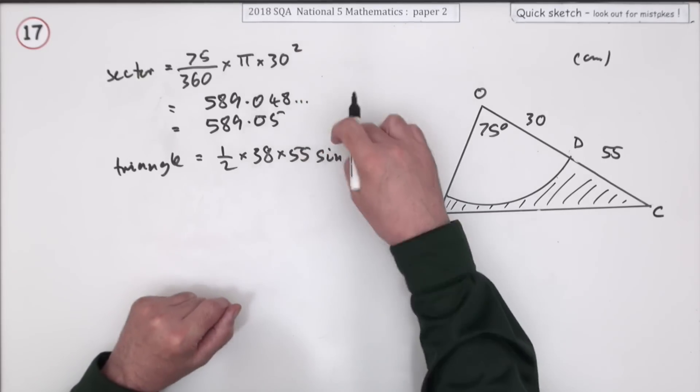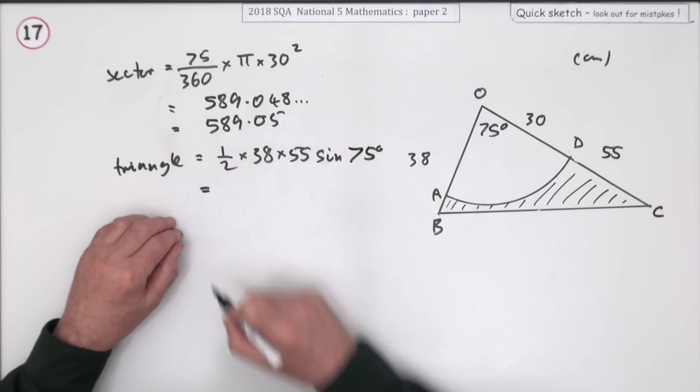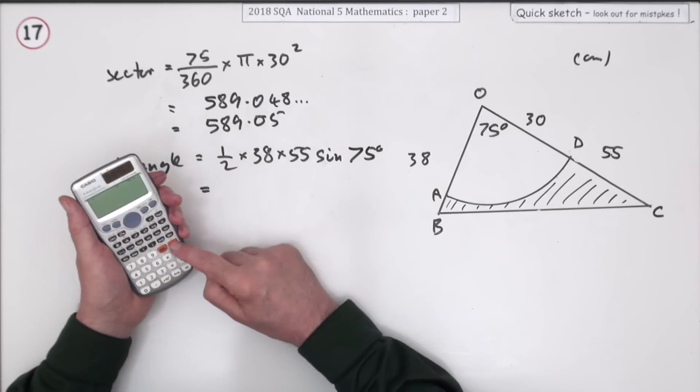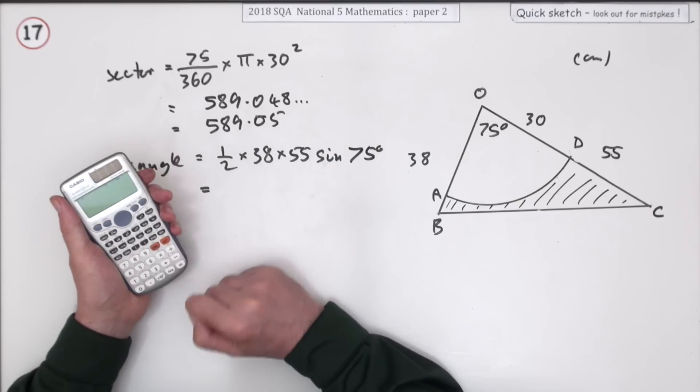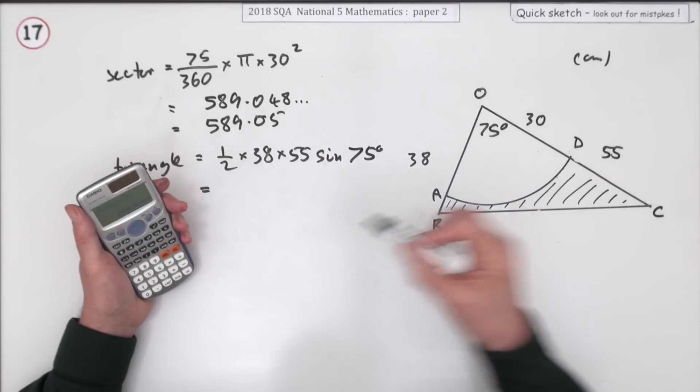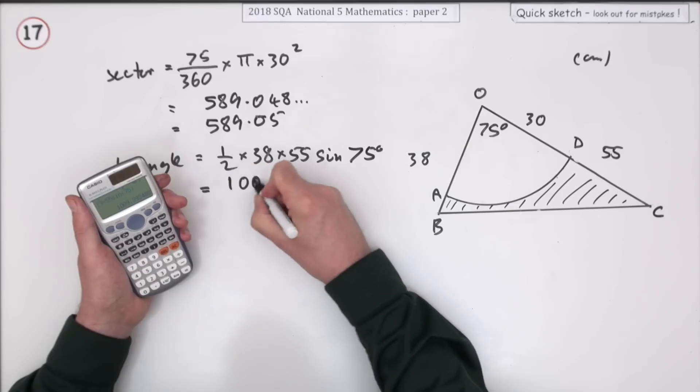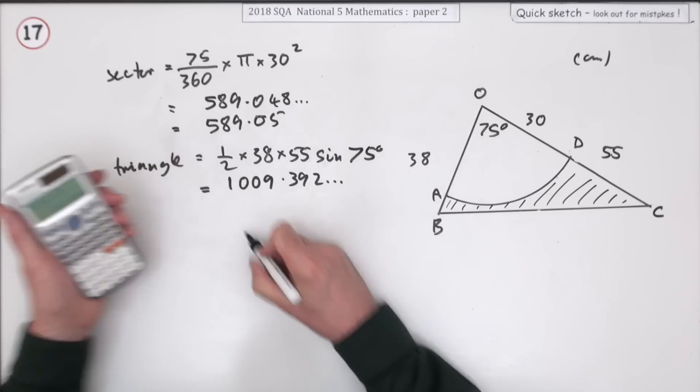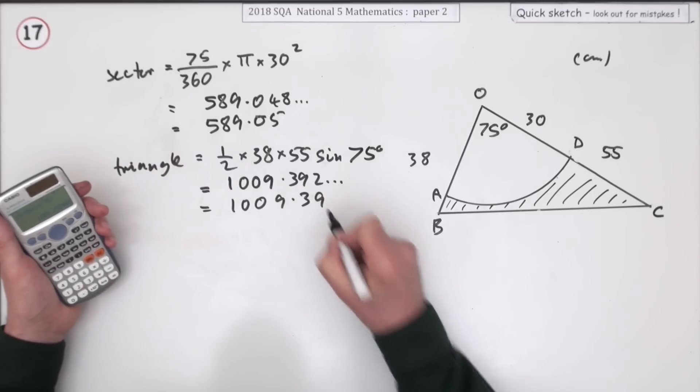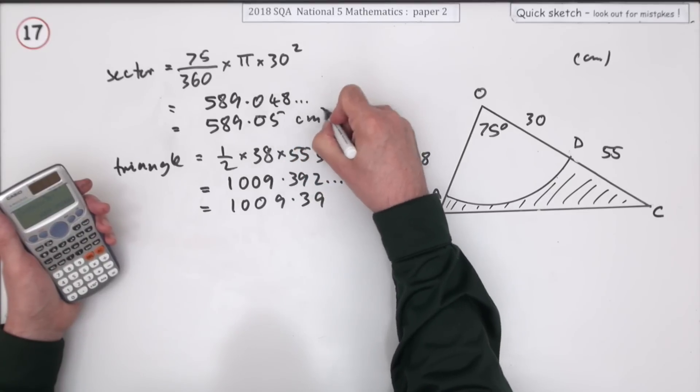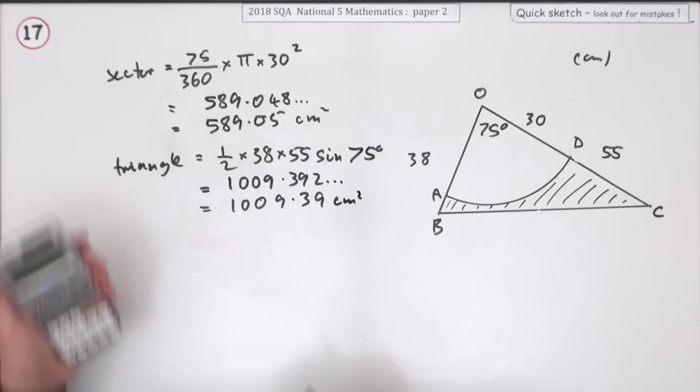That comes to 1009.392 and so on, and I'll round it off to 1009.39 centimeter squared.